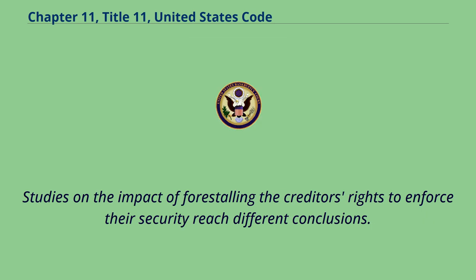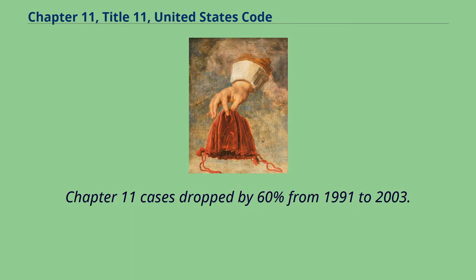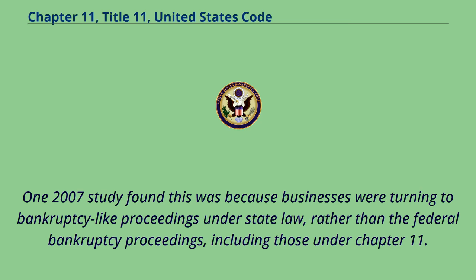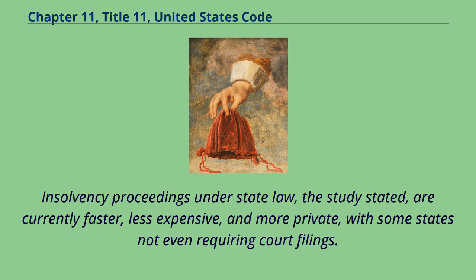Studies on the impact of forestalling creditors' rights to enforce their security have reached different conclusions. Chapter 11 cases dropped by 60% from 1991 to 2003. One 2007 study found this was because businesses were turning to bankruptcy-like proceedings under state law rather than federal bankruptcy proceedings, including those under Chapter 11. Insolvency proceedings under state law, the study stated, are currently faster, less expensive, and more private, with some states not even requiring court filings.